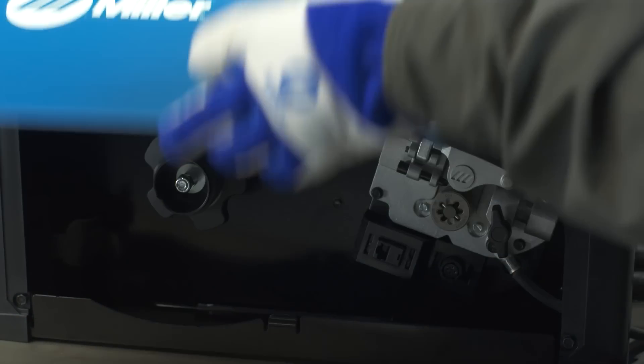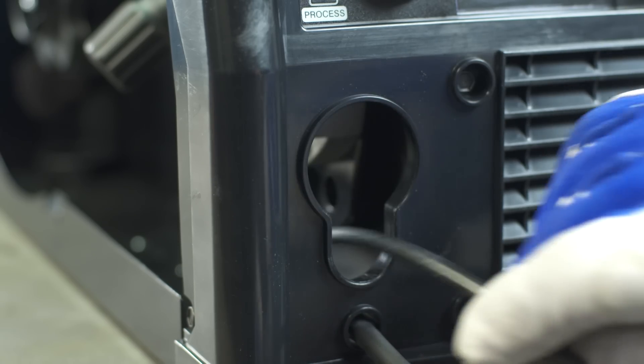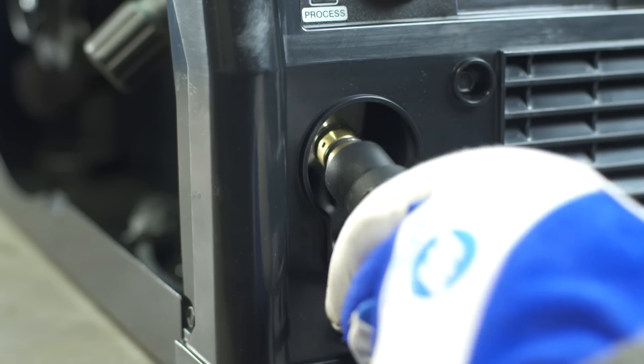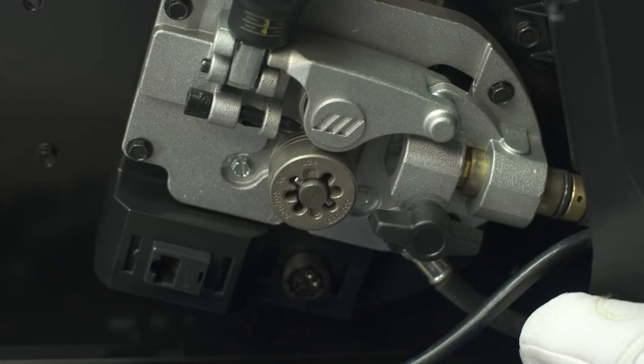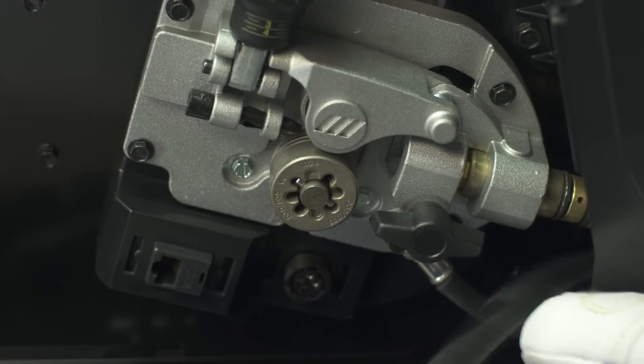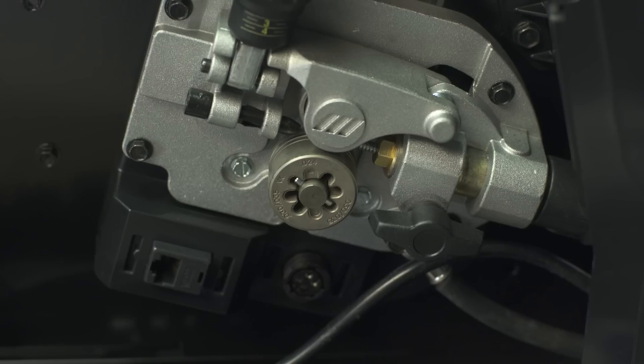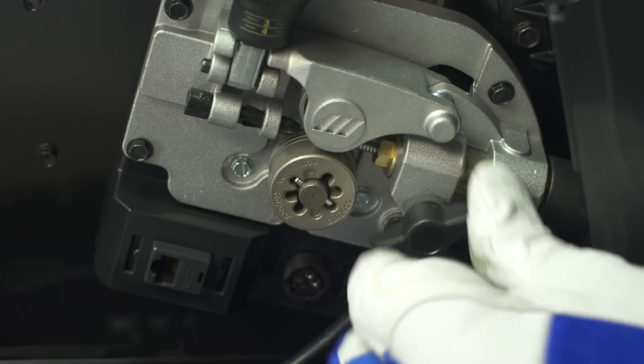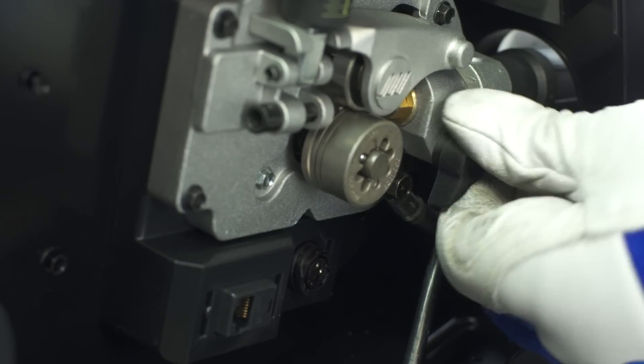Open the side door. Route the control cable through the access hole in the front of the machine. Then install the MIG gun into the drive casting in the front of the machine. Make sure it is completely seated in the drive assembly. Tighten the gun connection to the receptacle with a threaded side knob.